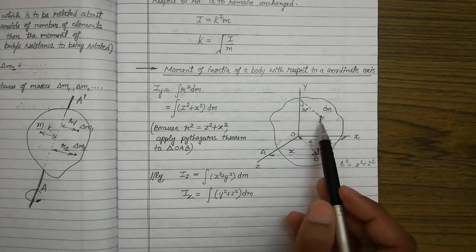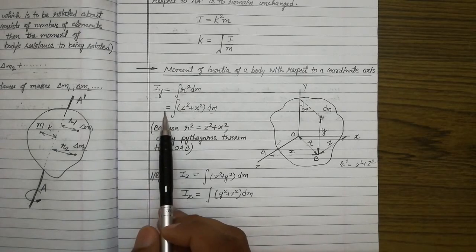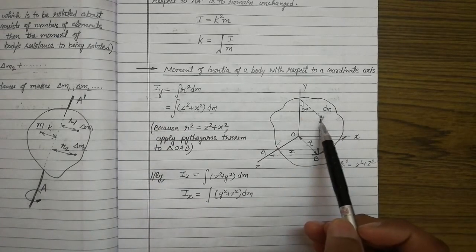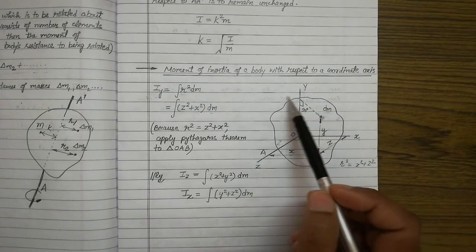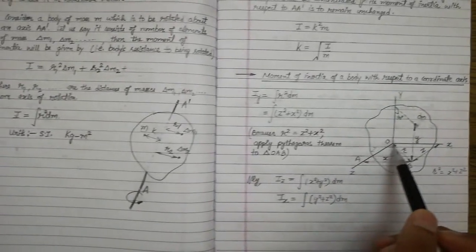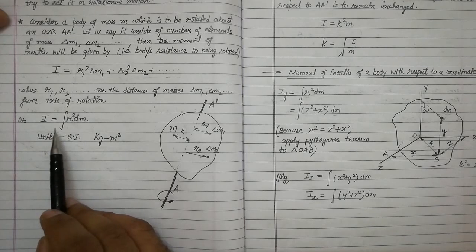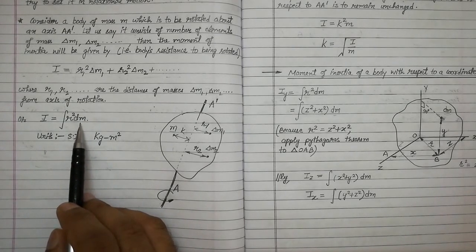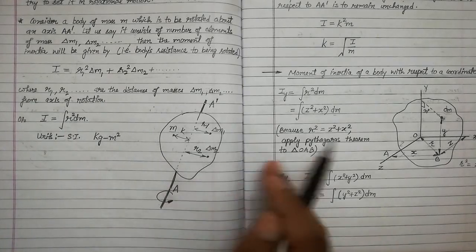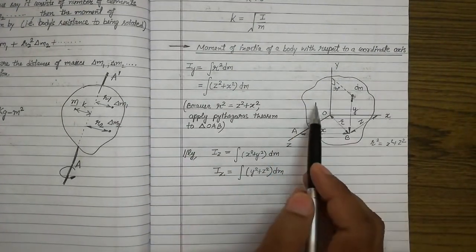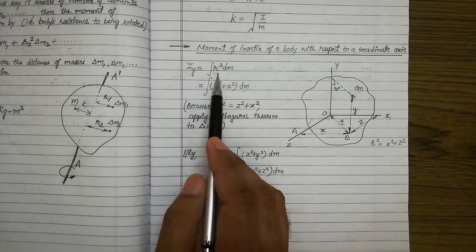We know that the moment of inertia represents the resistance a body offers against rotation about an axis. The formula for moment of inertia is I = ∫r² dm, where dm is the mass of the small element and r is its distance from the axis of rotation. To find the moment of inertia about the y-axis, we write: Iy = ∫r² dm.